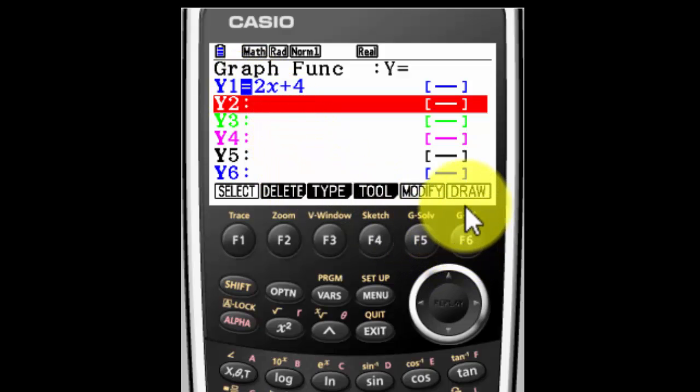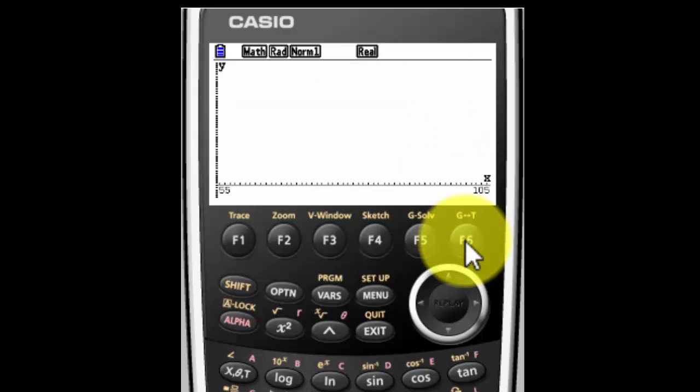To display the graph, all you do is press F6 because that's the soft key under the word draw. And it actually makes my graph. Now that really doesn't help me because I don't see anything. So I'm guessing my view window is probably not what I want it to be.